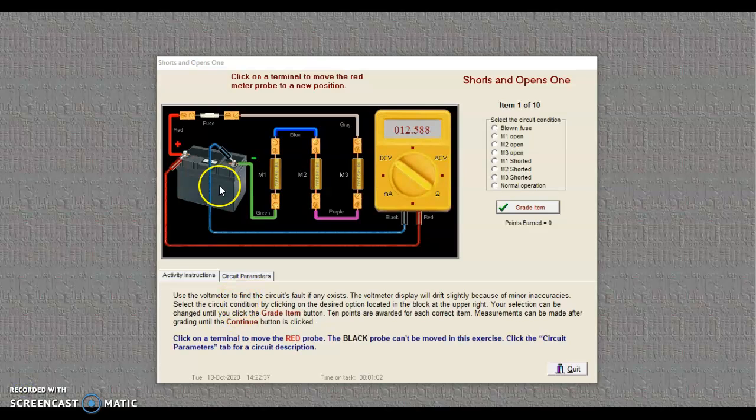So when we look at this circuit, here it is. Here's our 12-volt battery. Actually, 12.588 is our source voltage. These are our three modules, as you see, wound in series and protected by the fuse, and these are contact points where we can check our circuit.